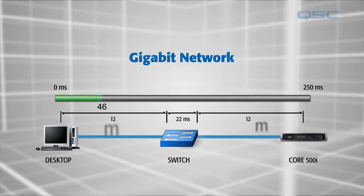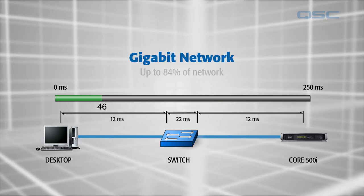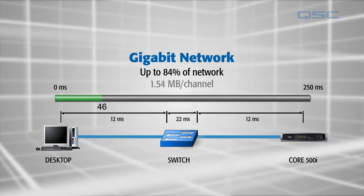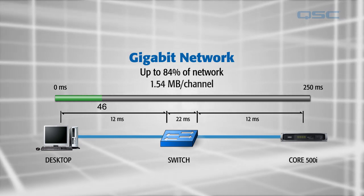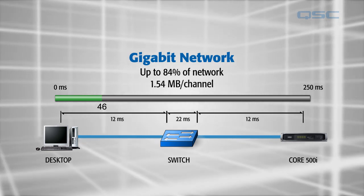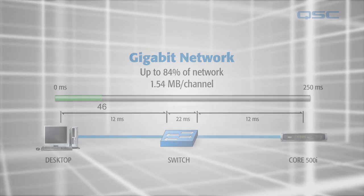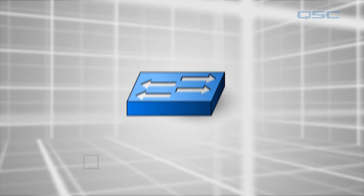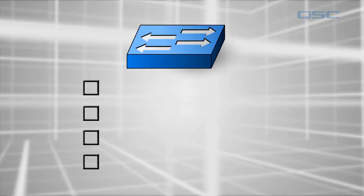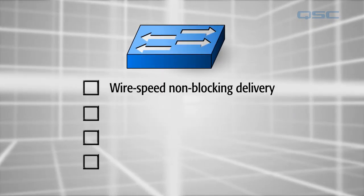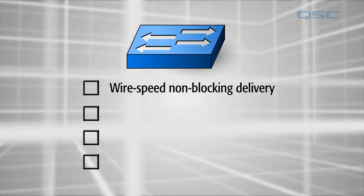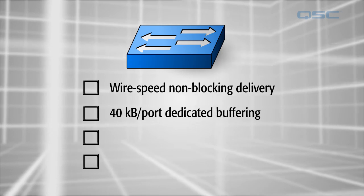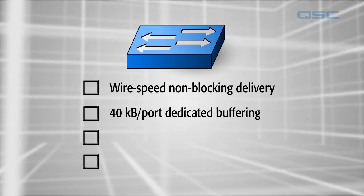Q-SYS can use up to 84% of a gigabit network using 1.54 megabytes per channel. When you're choosing which switches to use, keep in mind that your switch must have wire speed non-blocking delivery with at least 40 kilobytes of dedicated buffering per port.